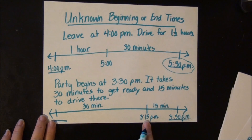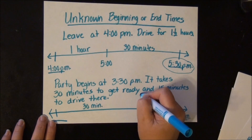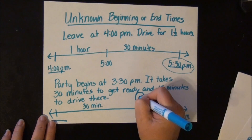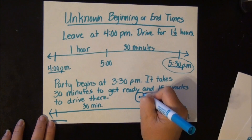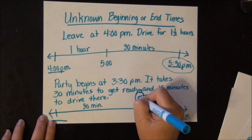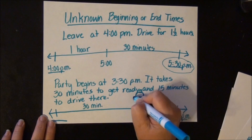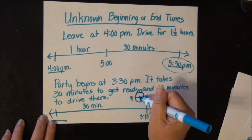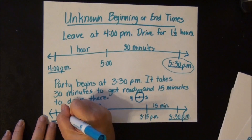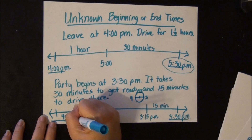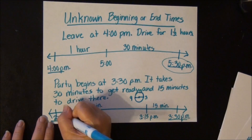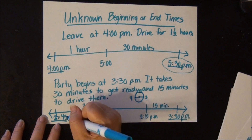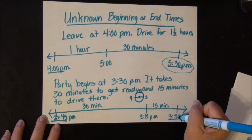We're working backwards, so then 3:15 minus 30 minutes — this is where it gets a little tricky. Draw yourself a quick clock: at 3:15, the big hand is pointing at the 3. If you go back 30 minutes, back 15 would be at the 12, then back 15 more — 15 and 15 is 30 — it would be pointing at the 9. If the big hand is at the 9, that's 45 minutes. And since you went backwards, it's the hour before — it's no longer 3, it is 2. So 2:45 p.m. is when you should start getting ready.